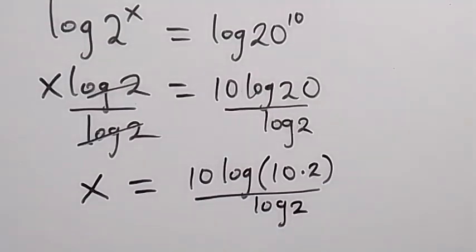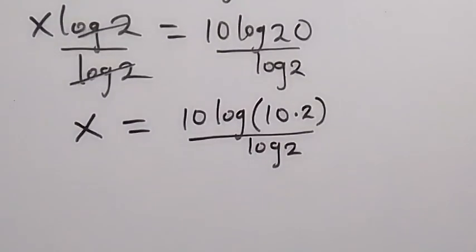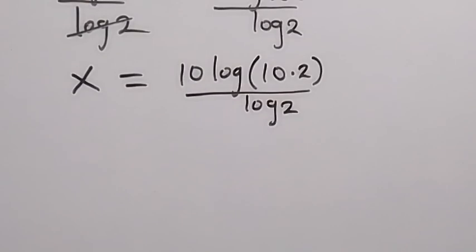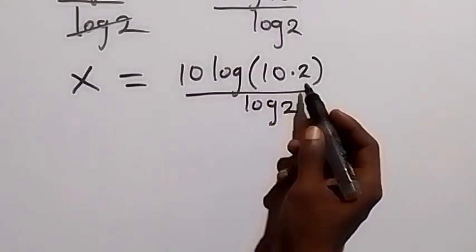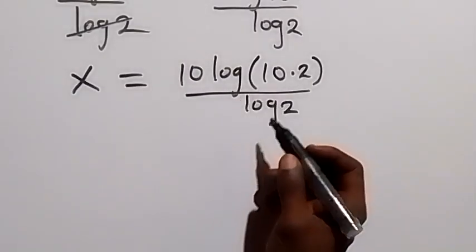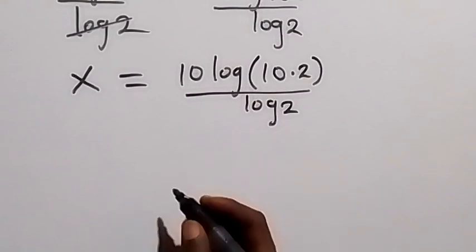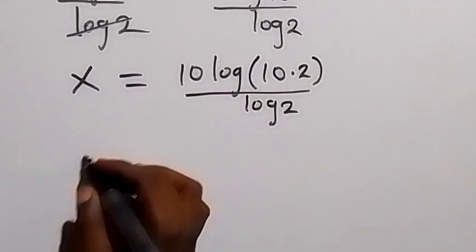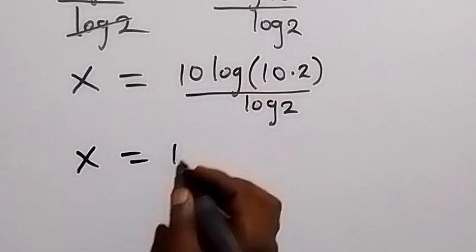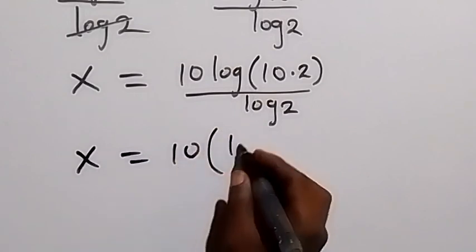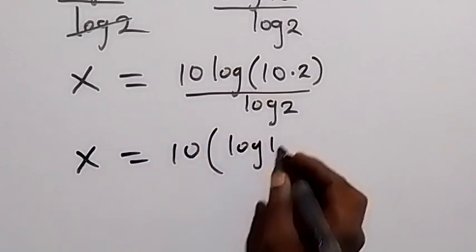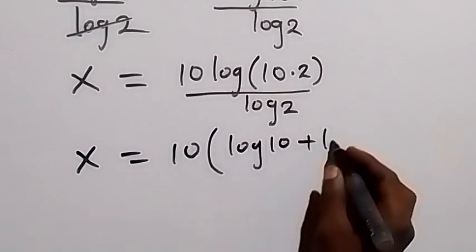So in the next step we apply the law of log. We can write log of 10 times 2 and separate it into 2 logs and sum them together. This will be x equals to 10 times (log 10 plus log 2) divided by log 2.